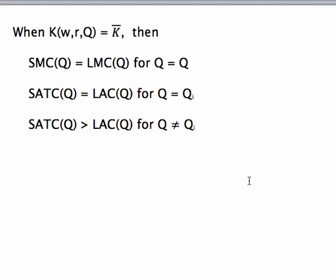Short run costs will only equal long run costs when the short run level of capital happens to be equal to the level the firm would have chosen in the long run to produce that level of output, Q sub i. At every other level of output, total costs in the short run exceed long run costs.